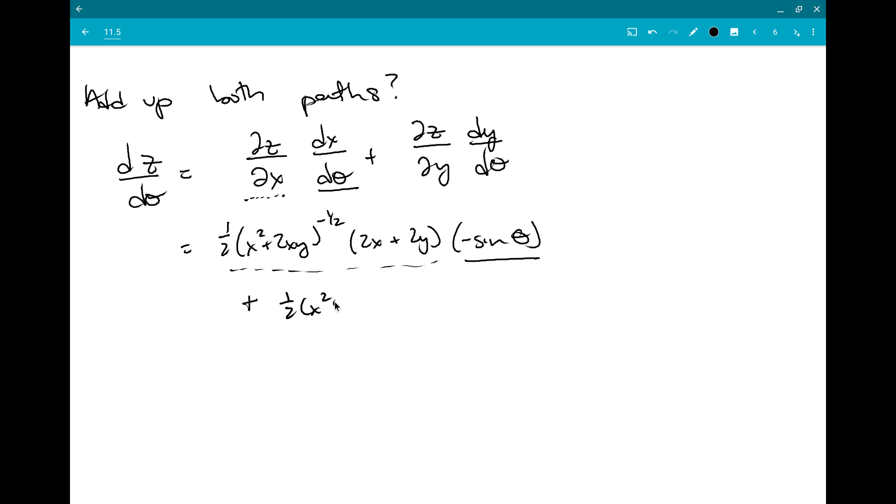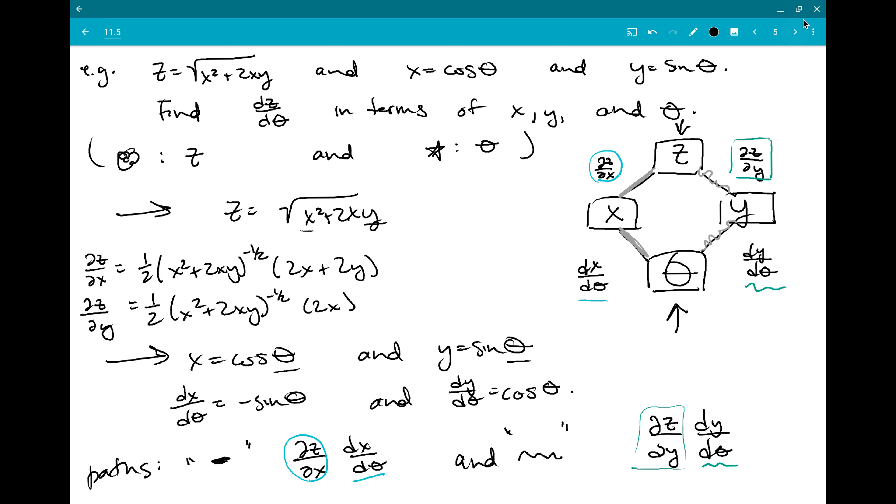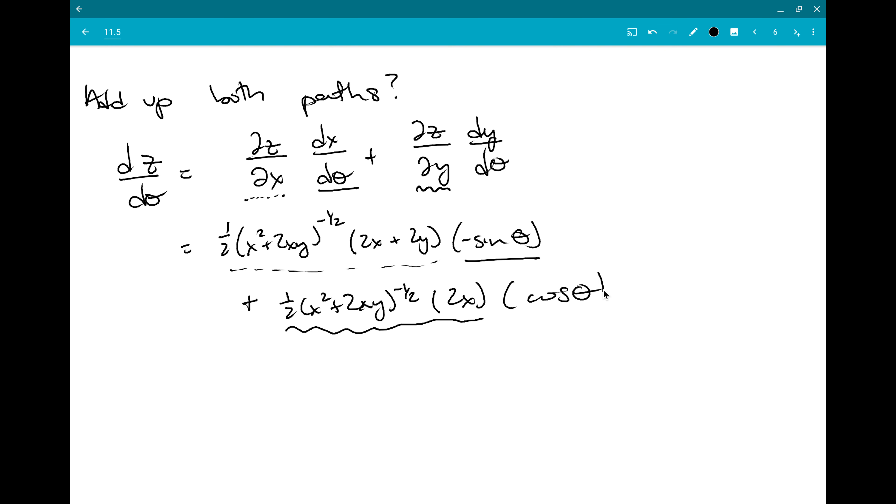And then I'm going to run out of room, so I'll go ahead and write plus right here. Plus one half x squared plus 2xy to the minus a half times the partial derivative with respect to y had given us 2x. There we go. And then dy d theta had given us just cosine theta, I think. Yep.